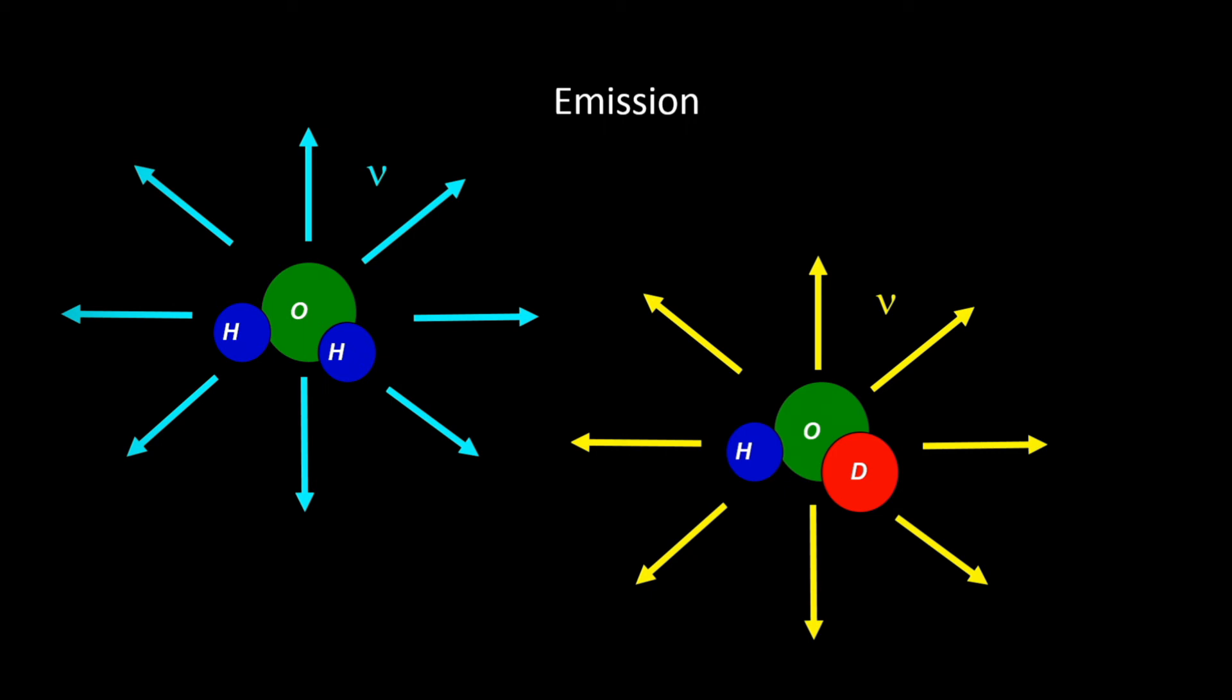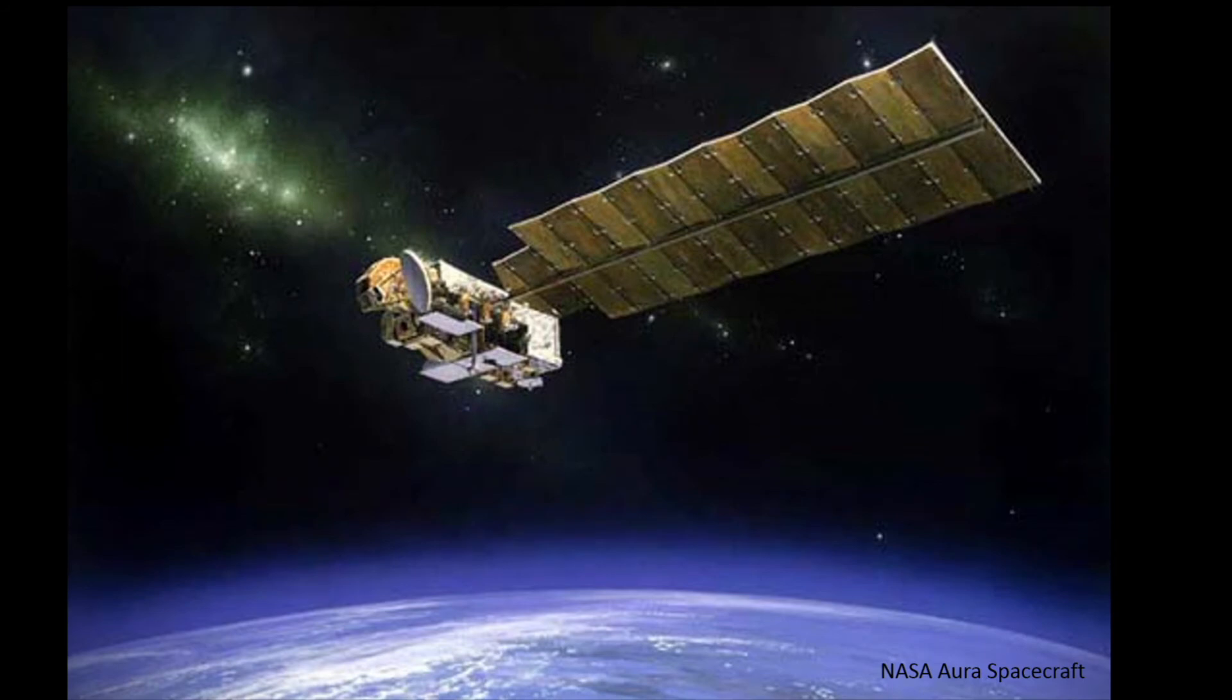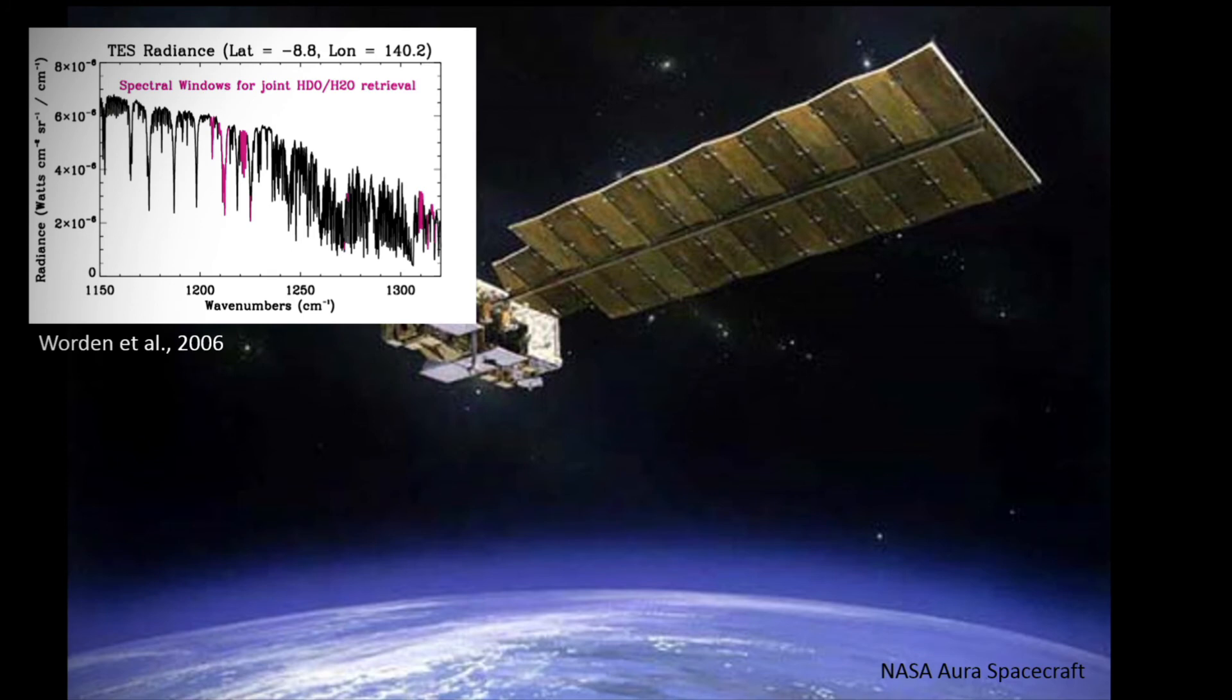A great place to look for the emission of radiation from Earth is from space. Here we have a picture of the NASA Aura spacecraft which has an instrument on board which can measure the emission spectrum. And an example spectrum is shown here where the purple features are indicating emission features that are associated with HDO molecules.